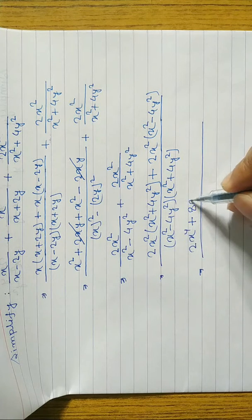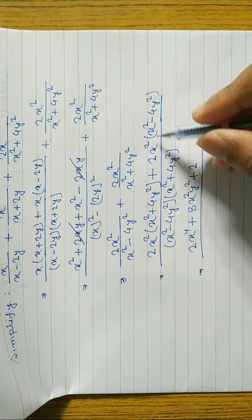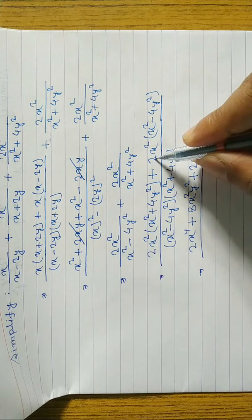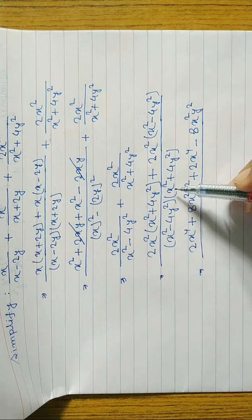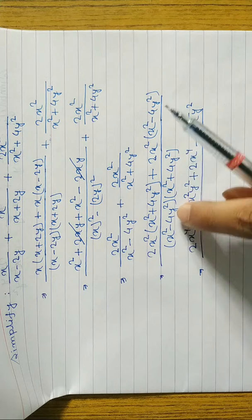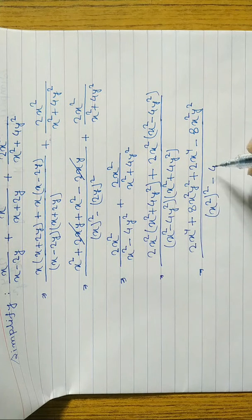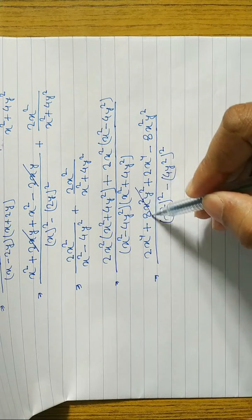Continuing: 2 times 4 gives 8, so we get 8x square y square. Then 2x square times x square again gives 2x to the power 4 (adding powers: 2 plus 2 equals 4), and minus 2 times 4 gives minus 8x square y square. In the denominator, we see the form (a plus b)(a minus b) where a is x square and b is 4y square, so we write x square whole square minus 4y square whole square.